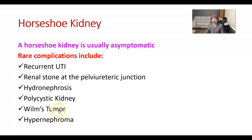Both Wilms tumor and hypernephroma are cancers. Wilms tumor is a malignant tumor of the child's kidney, and hypernephroma is a malignant tumor of the adult kidney.